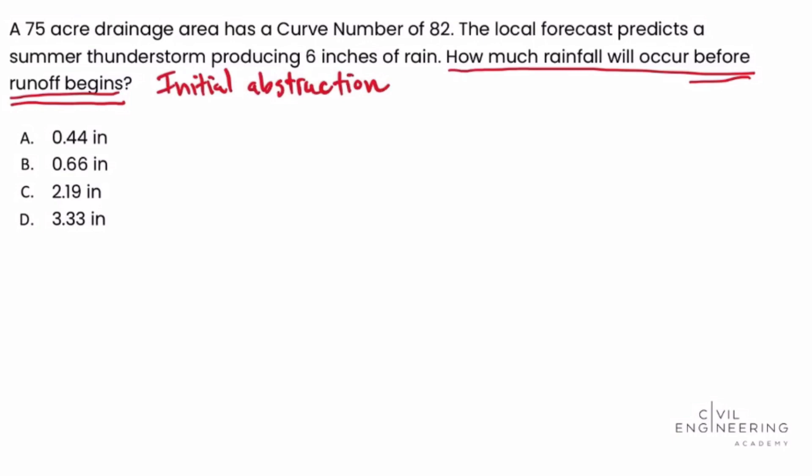We need to be very familiar with the concept of the initial abstraction and realize that not all rainfall will runoff. There will be a period of time at the beginning of each rainstorm where there may not be any runoff, as these processes are occurring.